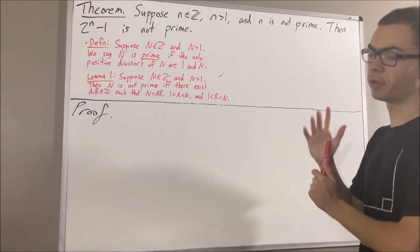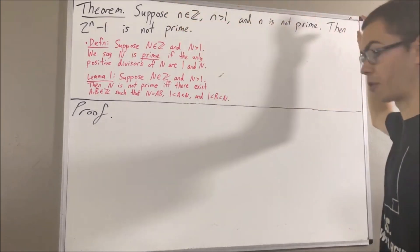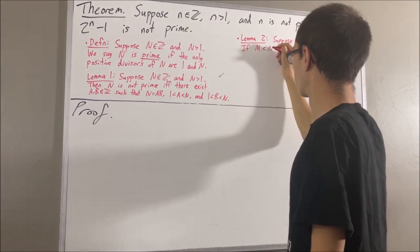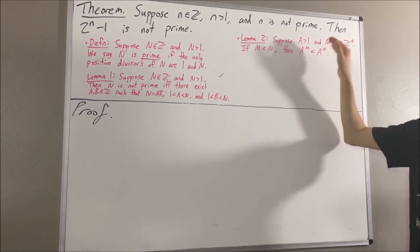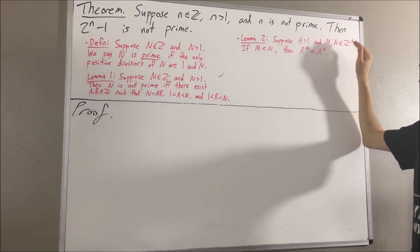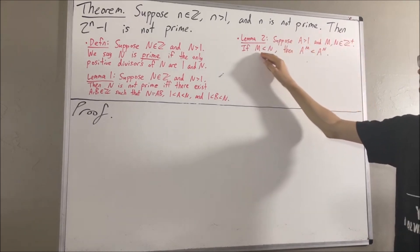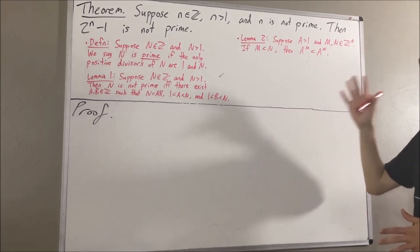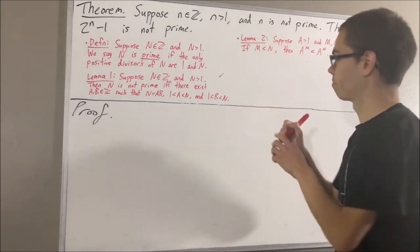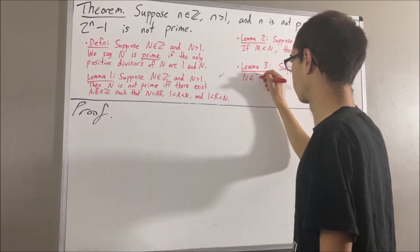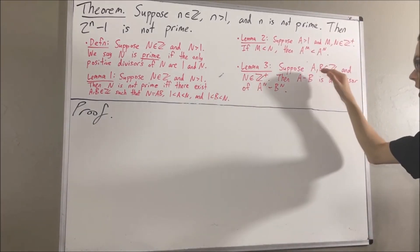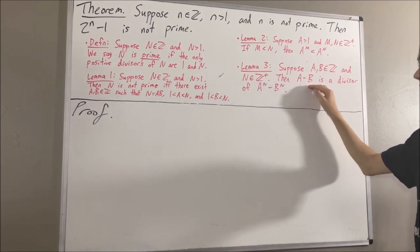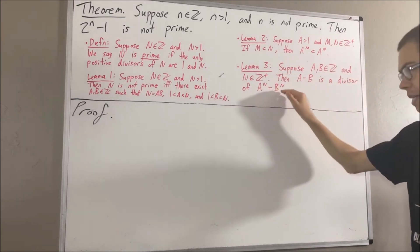Now, there are some other preliminary results we're going to be using in proving this theorem. One of them is the following: suppose a is a real number greater than 1 and m and n are positive integers; if m is less than n, then a to the power of m is less than a to the power of n. Here's another preliminary result: suppose a and b are integers and n is a positive integer; then a minus b is a divisor of a to the power of n minus b to the power of n.